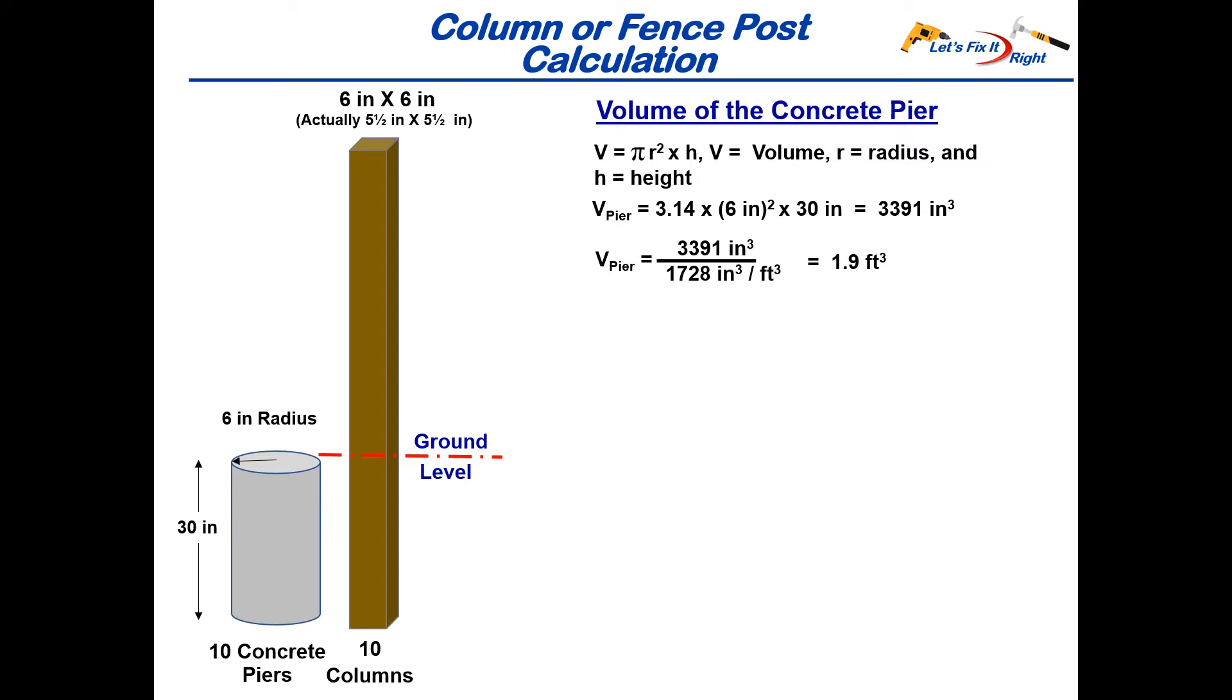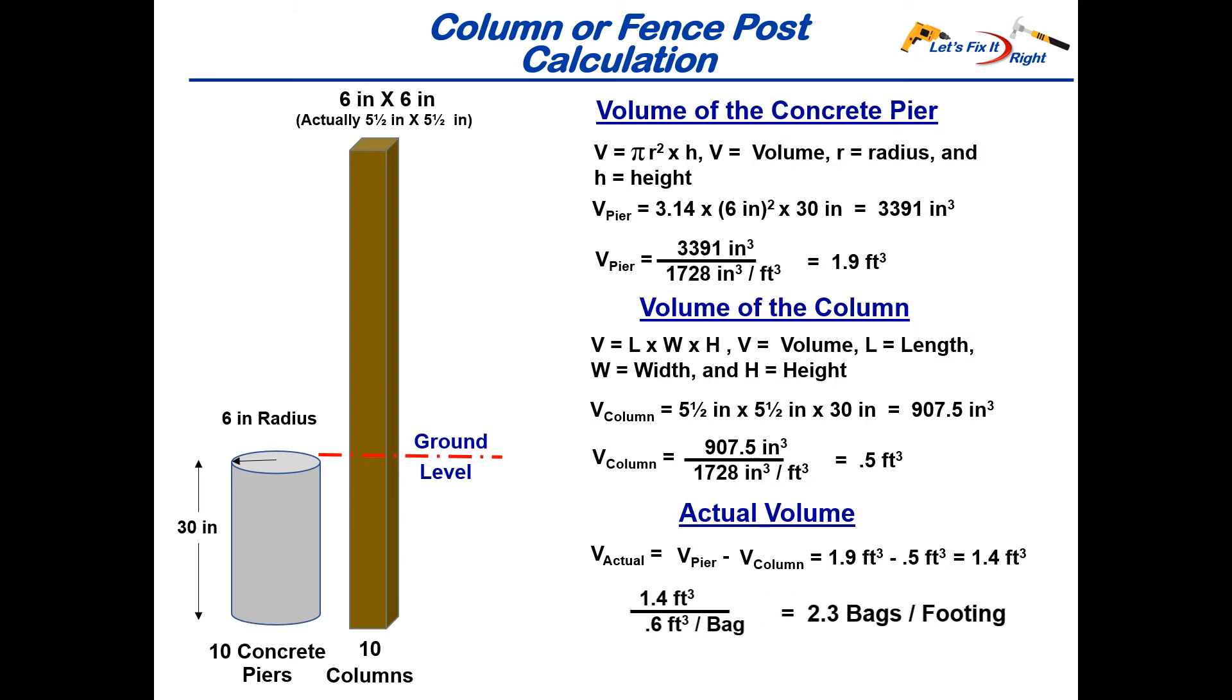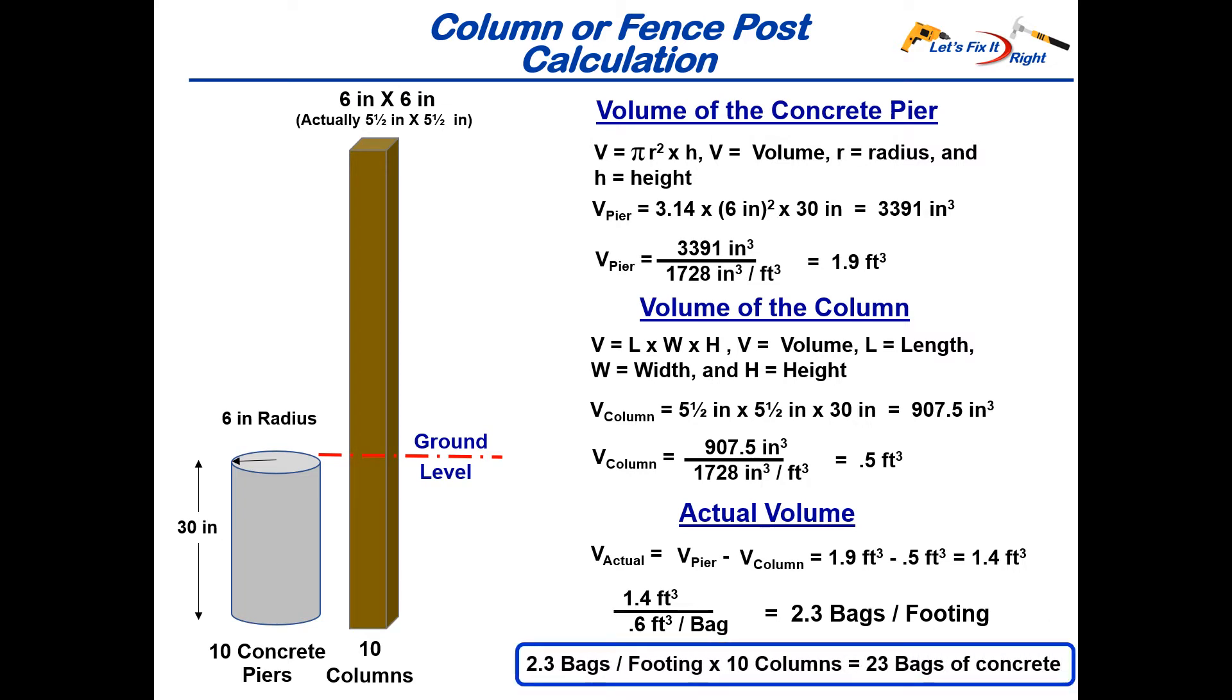To account for the submerged column, we use length times width times height, which gives us 907 1/2 cubic inches. Dividing this by 1728 cubic inches per cubic foot provides a value of 1/2 cubic foot of displacement for each of the 10 columns. Subtracting this from the pier volume provides a concrete requirement of 1.4 cubic feet for each embedded pier. Dividing this by 0.6 cubic feet per bag gives us 2.3 bags per footing, and a total of 23 bags of concrete for the entire job.